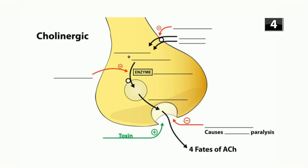Choline is essential to making acetylcholine. There's a sodium co-transporter that brings both choline and sodium into the cell, so sodium drives the transport of choline into the cell. This co-transporter can be inhibited by a drug called hemicholinium, so hemicholinium inhibits the transport of choline.